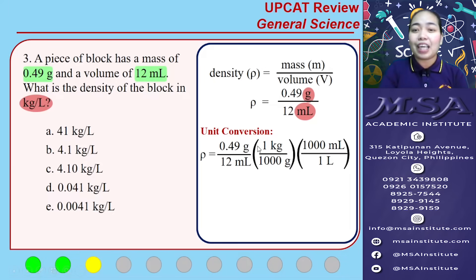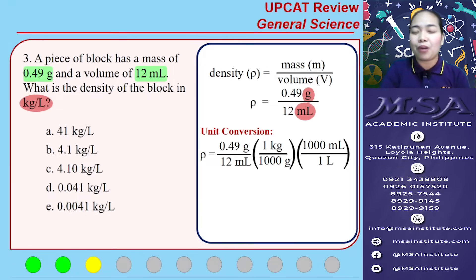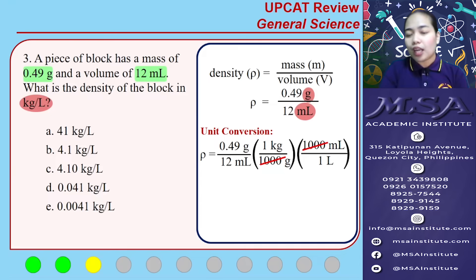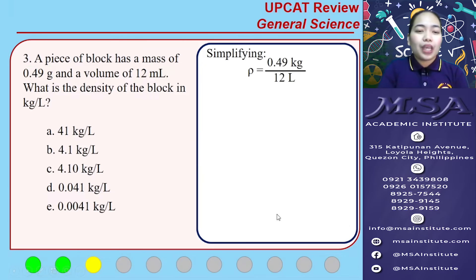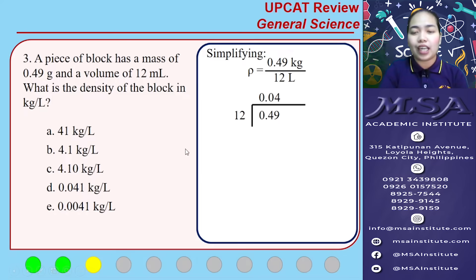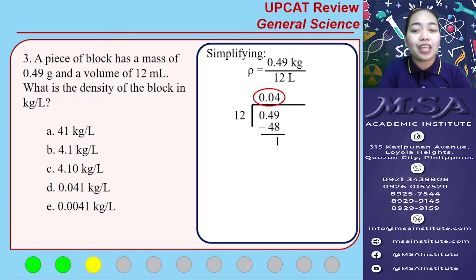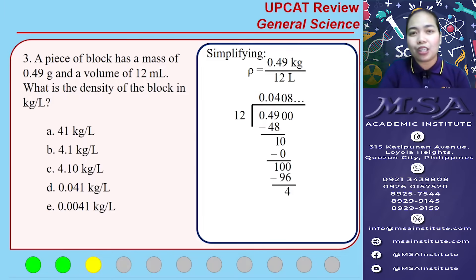For the unit conversion, we'll be using dimensional analysis. To know more about dimensional analysis, you may check our previous video about unit conversion. We cancel out the 1,000 and cancel the grams and milliliters, leaving us with 0.49 kilograms divided by 12 liters. Since the answer choices only differ in decimal places, if we proceed with the division, 0.04 matches letter D. We can safely assume letter D is already the answer without completing the full solution, saving us time.